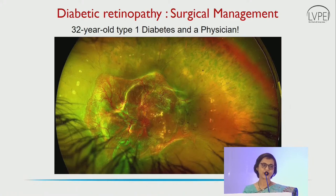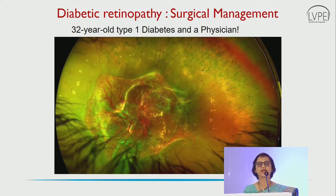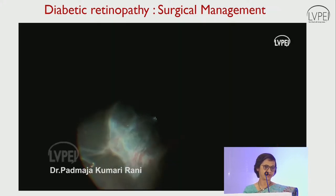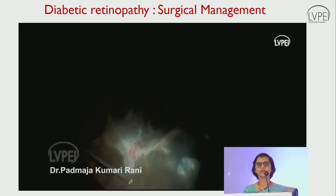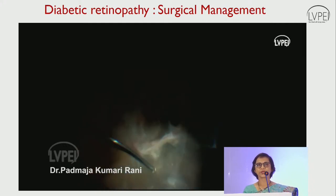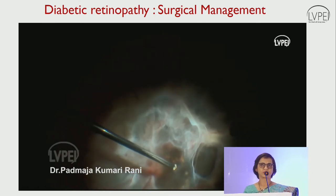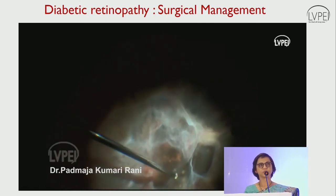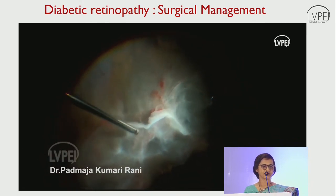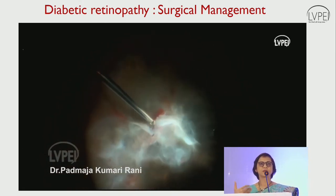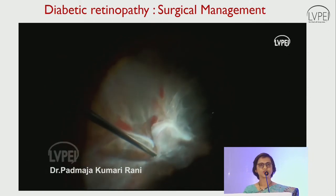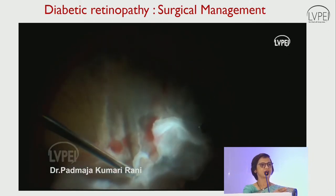Here is a 32-year-old type 1 diabetic physician who never had an eye examination. He had some laser done and now presents with advanced diabetic retinopathy. These surgical videos are usually edited to one minute, but this is how advanced diabetic retinopathy presents. We perform micro-vitreous surgery, intervening with instruments to dissect the membranes. The patient could have simple vitreous hemorrhage or an advanced traction detachment where the entire membrane is plastered to the retinal surface.